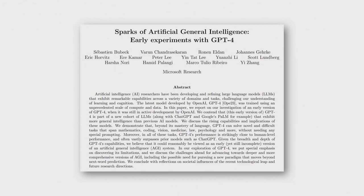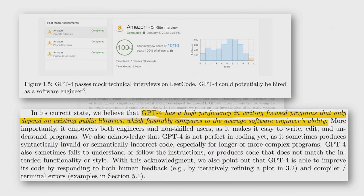I want to highlight one more paper — the Sparks paper from Microsoft — which looks into artificial general intelligence within GPT-4, examining whether GPT-4 is getting close to modern human intelligence. One finding is that GPT-4 performed well enough on mock technical interviews on LeetCode that it could potentially be hired as a software engineer at a major IT company. GPT-4 also has high proficiency in writing focused programs that depend on existing public libraries, comparable to the average software engineer.